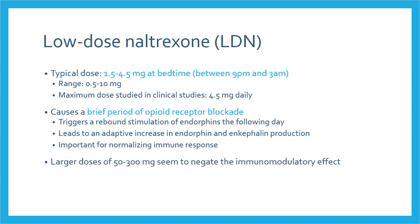Low-dose naltrexone, or LDN, refers to daily dosages of naltrexone that are approximately one-tenth of the typical opioid addiction treatment dose. The typical dose is usually 1.5 to 4.5 milligrams at bedtime, taken between 9 p.m. and 3 a.m. The range of doses can be as low as 0.5 milligrams and as high as 10 milligrams, but the maximum dose studied in clinical trials was 4.5 milligrams daily.